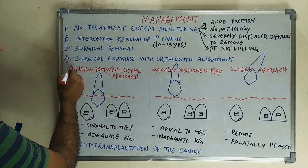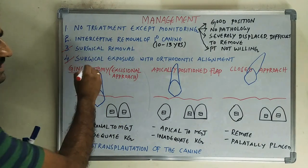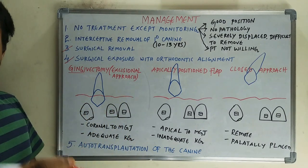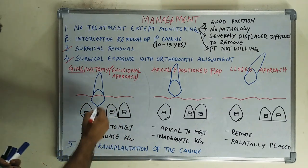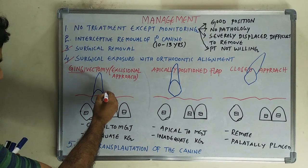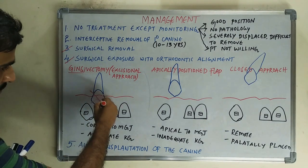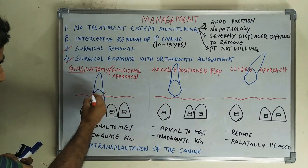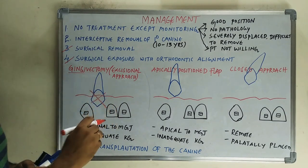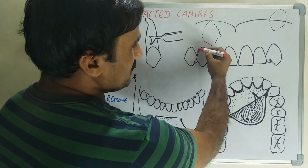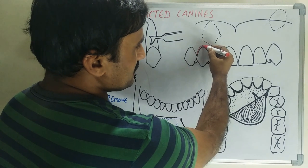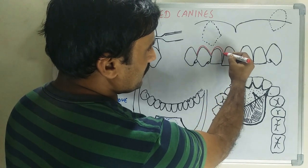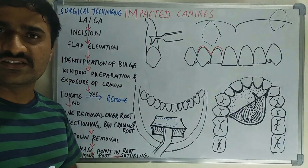In this case you go for simple exposure by gingivectomy. We take a cruciform incision — that is, an X-shaped incision — in the estimated position of the canine. Along with this, crevicular sulcus incisions are made around the adjacent teeth.